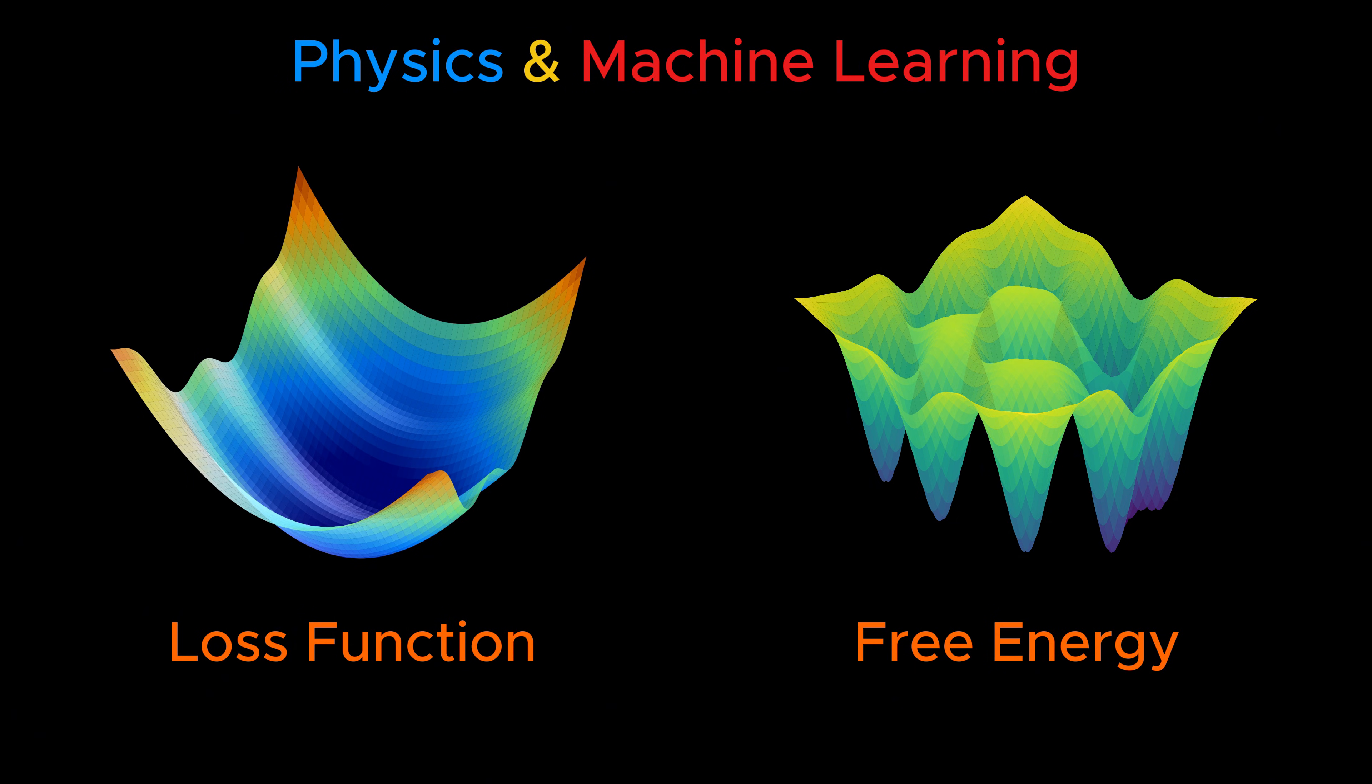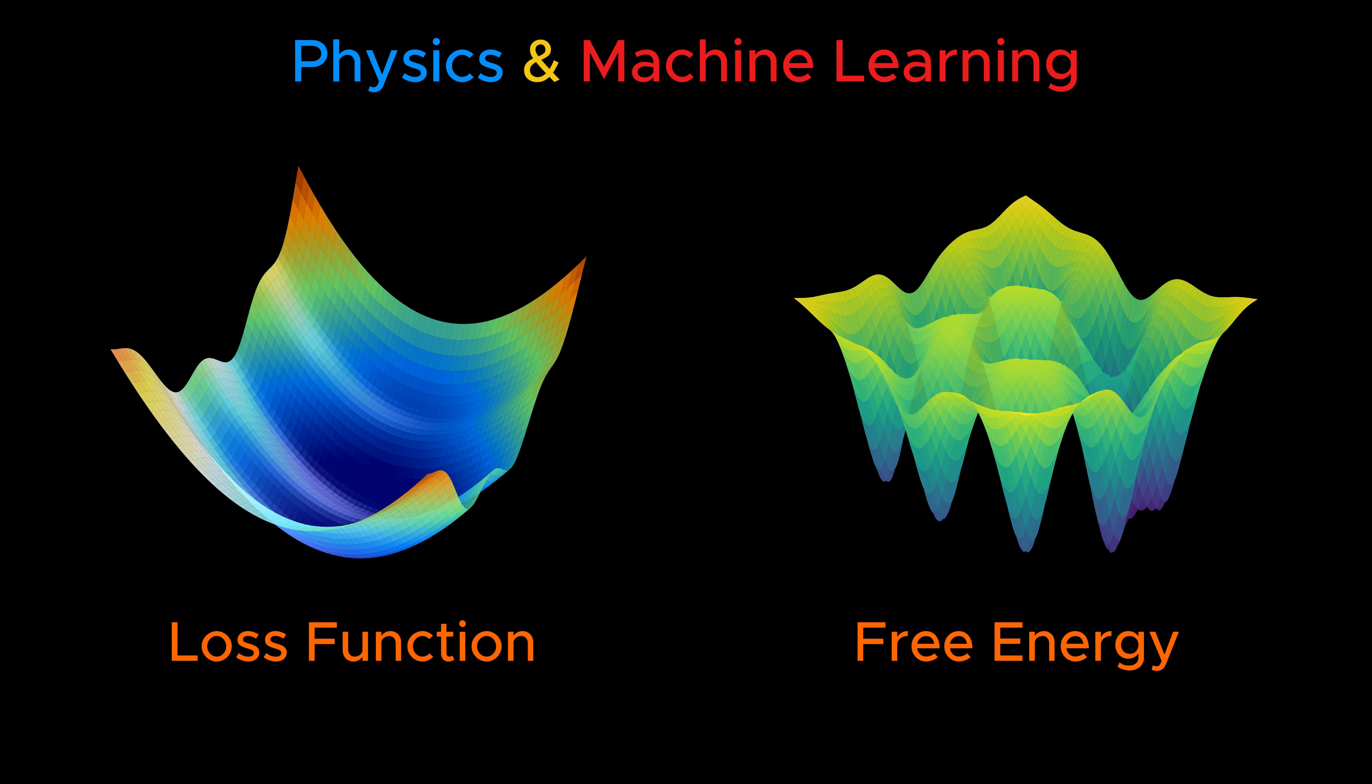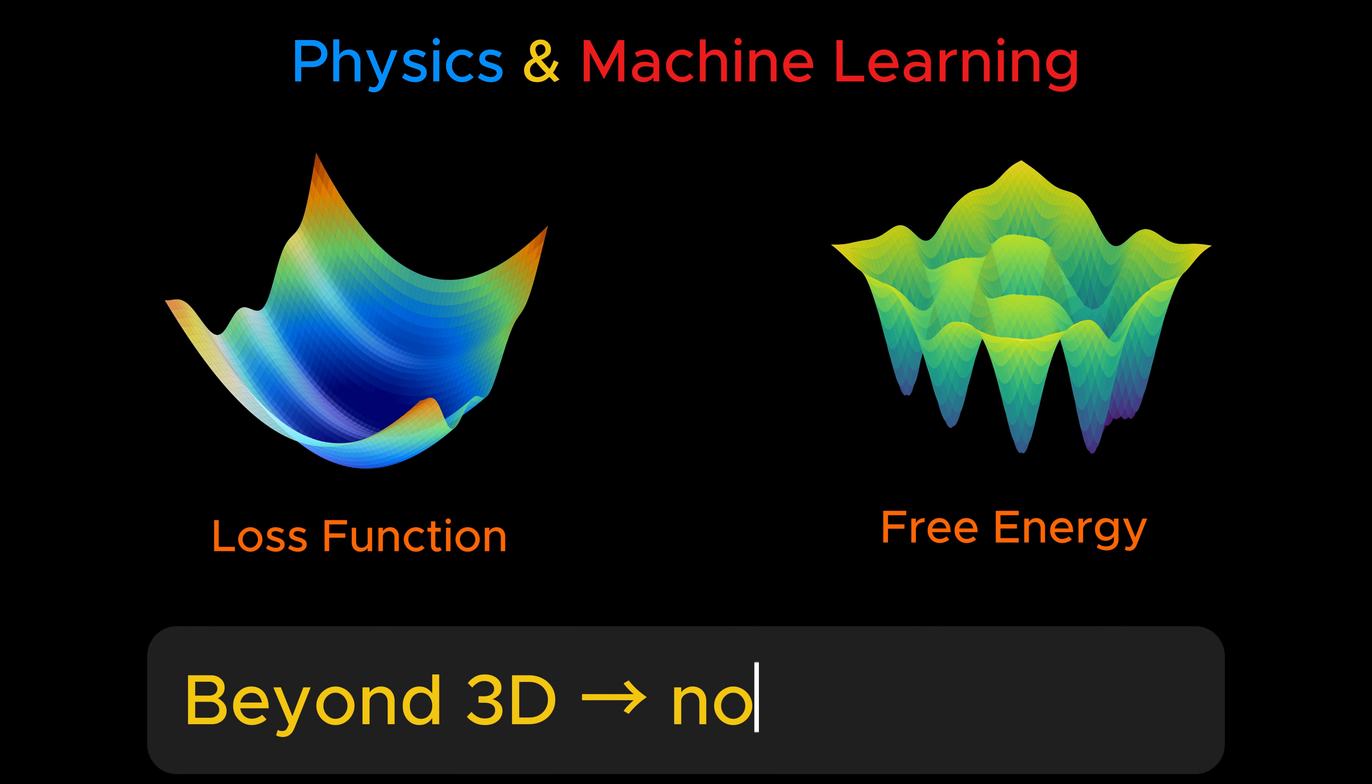These two objects sit at the heart of how we understand probabilistic models of machine learning. The problem is that, unless we are working with toy problems, these landscapes live in spaces with far more than three dimensions.